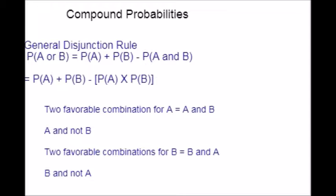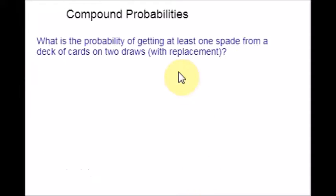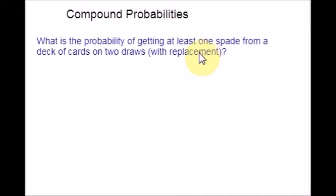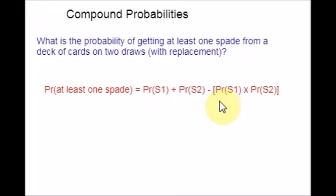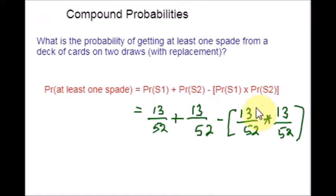Let us see one example: what is the probability of getting at least one spade from a deck of cards on two draws with replacement? The probability of at least one spade equals probability of spade 1 or spade 2 minus probability of spade 1 and spade 2. There are 13 spades out of 52 cards. Since you are replacing it back, the probability of S2 is also 13 over 52.